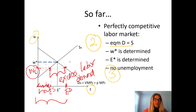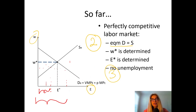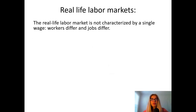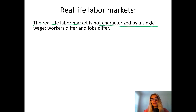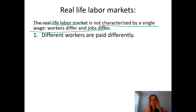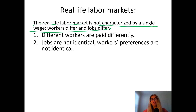No unemployment when we are at the equilibrium point. There would be a single type of work with identical jobs and identical workers in the economy. But real-life labor markets are not characterized by a single wage. We don't have just one single wage rate — workers differ and jobs differ too. A professor is paid differently than a tech CEO; a janitor is paid differently than a car mechanic. Jobs are not identical in the real world.